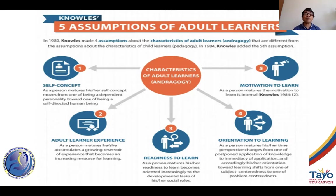This wealth of experience becomes the reservoir of resource for learning. The third assumption is that a person is increasingly deliberate in wanting to learn because it is related to his task — he wants to improve his roles and performance, whether in society or in the workplace. The fourth assumption is on orientation to learning: the adult learner is oriented towards addressing a specific problem or issue in the performance of his work or role.